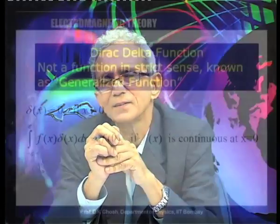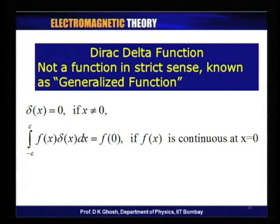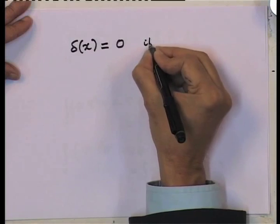In the remaining time, I would like to introduce two more mathematical topics. The first one is called Dirac's delta function. Dirac, as you probably know, was a very well-known physicist who shared a Nobel Prize with Schrödinger for his contribution to quantum mechanics. The Dirac delta function is a funny function — in strict sense it is not a function at all; it is either called a generalized function or a distribution. The definition says it is zero everywhere except at a point: delta of x equals zero if x is not equal to zero.